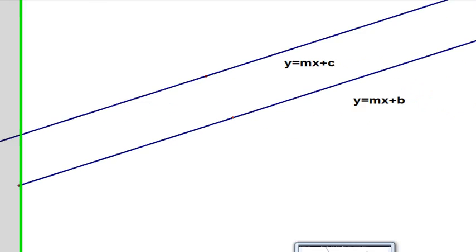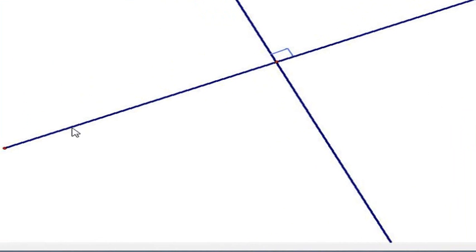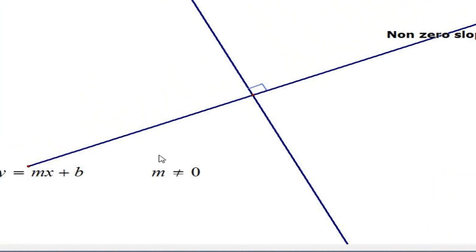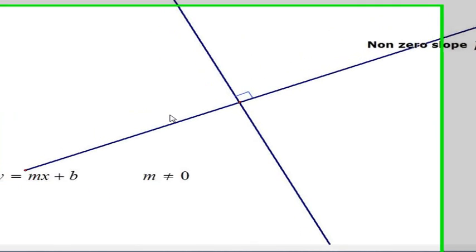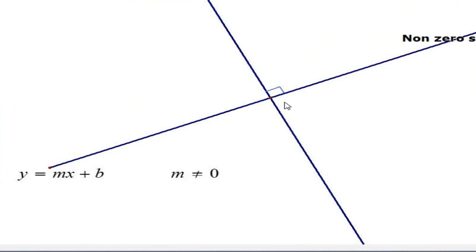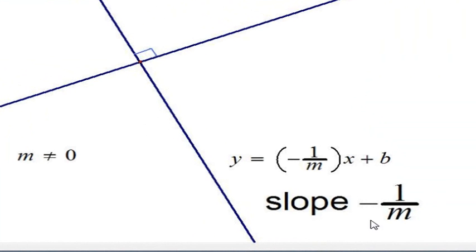And then, if we want to talk about perpendicular lines. So, say I have a line with non-zero slope, say again, y equals mx plus b, and I'm looking at a line that's perpendicular to this line here, then the slope of that line would be what? Negative 1 over m or the negative reciprocal.